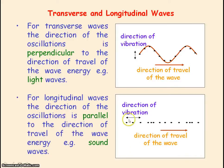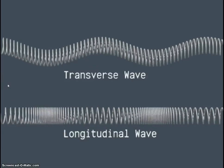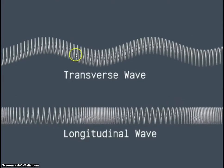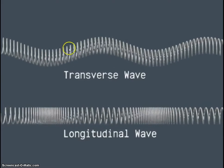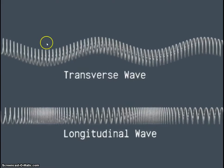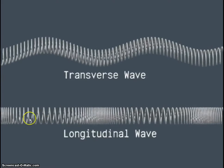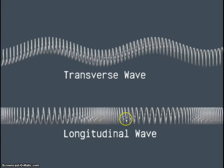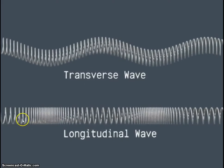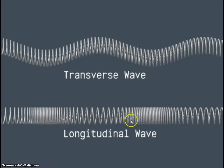For a longitudinal wave, the direction of the oscillations or vibrations is parallel to the direction in which the wave energy is travelling. An example of a longitudinal wave would be sound. Going back to the movie clip, you can see each slinky coil in the transverse wave is oscillating perpendicularly to the direction in which the wave energy travels — the wave energy moves to the right and each coil oscillates up and down. For the longitudinal wave, each slinky coil oscillates parallel to the direction of wave energy travel — to the right — so each coil oscillates left and right.